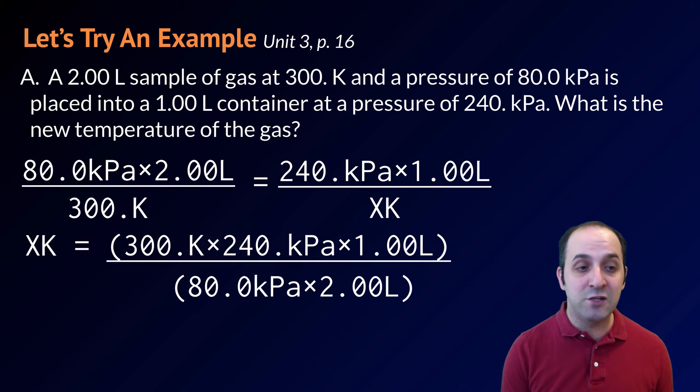Rearranging this equation so that T2 is by itself, I get that T2 is going to be equal to the product of 300 degrees Kelvin times 240 kilopascals times 1 liter divided by the product of 80 kilopascals times 2 liters. This is just cross multiplication and division, isolating the x variable.